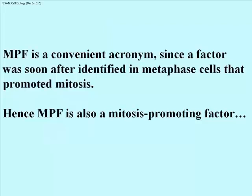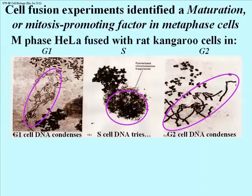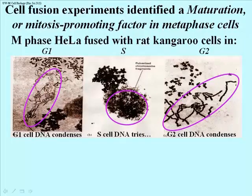MPF is a convenient acronym, because a similar factor was found in metaphase somatic cells. Metaphase cells could be fused with other cells in other phases of the cell cycle. In each case, the nuclei of the other cell would break down, and chromatin would try to condense into chromosomes, as seen here for cells in G1 and G2, where chromosomal strands are trying to form after fusion with a metaphase cell. Even the chromatin of an S phase cell tries to condense, although strands don't really form, probably because the replicating DNA makes it harder to do so.